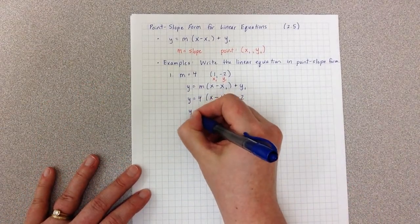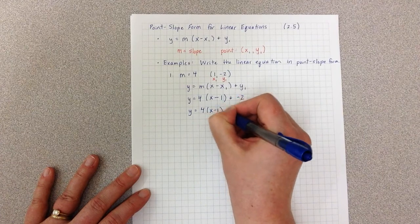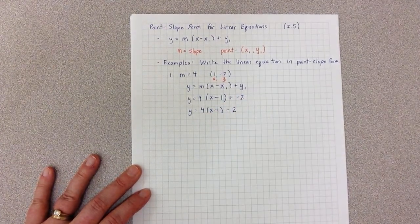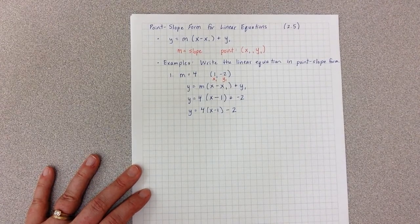So maybe the last thing I want to do is just make this look a little bit nicer by saying I can really just write that as subtracting 2. And that's all I need to do. That is point-slope form.